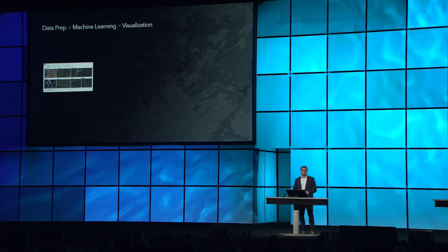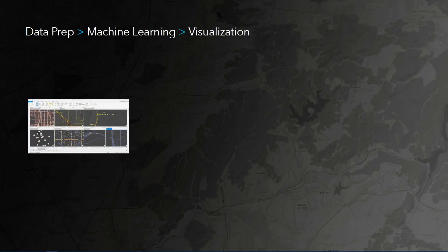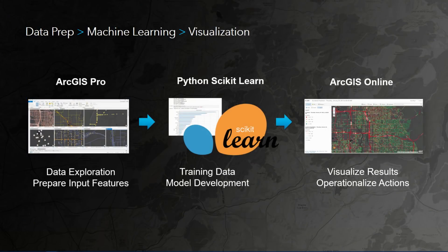We're going to do three main things. First, we're going to use ArcGIS Pro to prepare our training data and explore the data. Then we're going to pass it to scikit-learn to train a machine learning model. And finally, we're going to see the predictions visually using ArcGIS Online versus the actual accidents. So why don't we just see this in action?